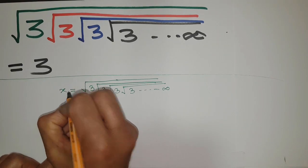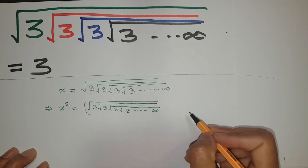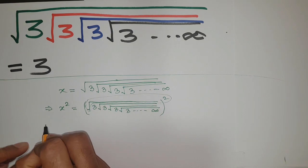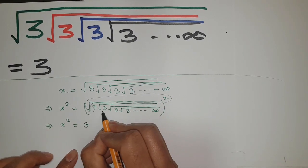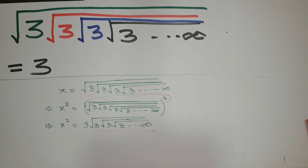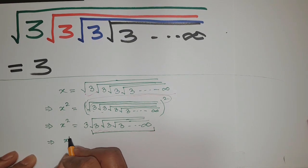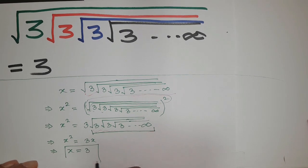Let us consider this series is equal to x. Take the square on both sides — the left hand side becomes x squared, and on the right hand side, the square and the square root cancel. Finally we get x squared is equal to 3 times x. One x is eliminated from both sides, and the remaining result is x is equal to 3. That's the answer I told you at the beginning.